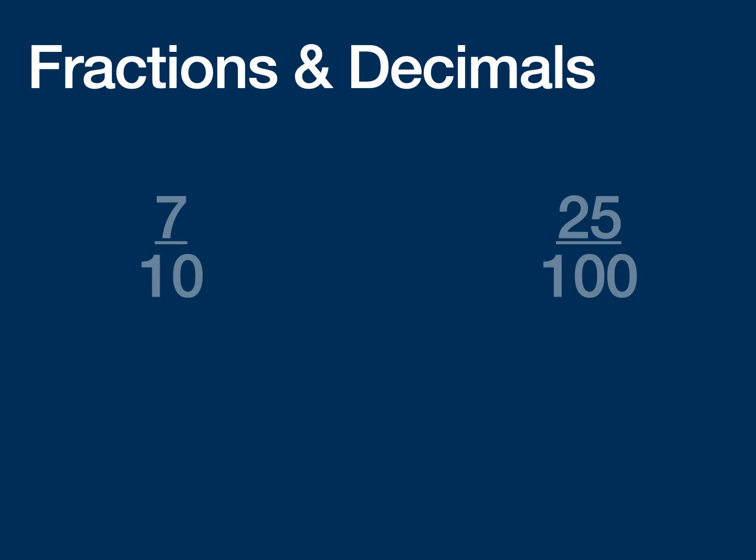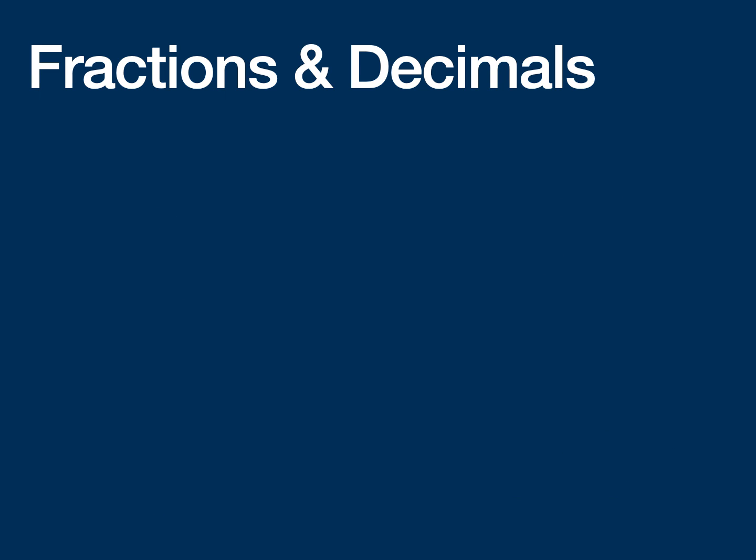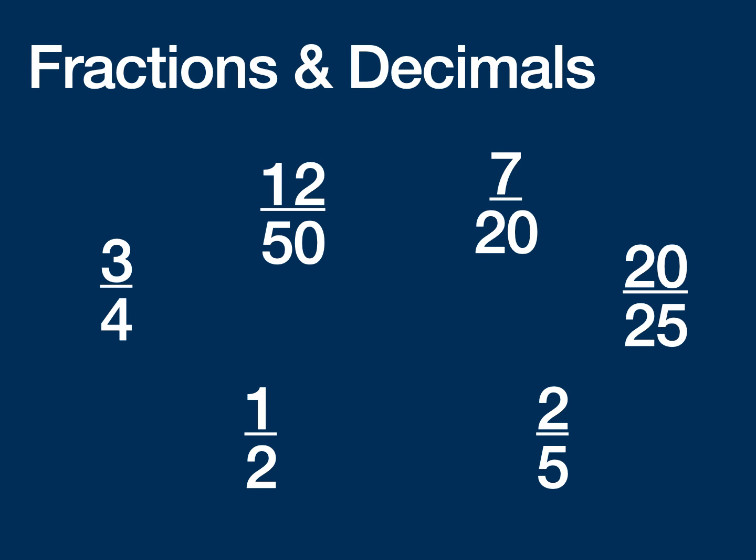Now, just thinking about this, if I have something over 10 or something over 100, I know really easily how to turn that into decimals. The problem, of course, is not every fraction in the world has a 10 or 100 in the denominator. Here's a collection of fractions that do not have 10s and do not have 100 in the denominator. But there are still ways that we can use these specific denominators and turn them relatively easily into decimals.